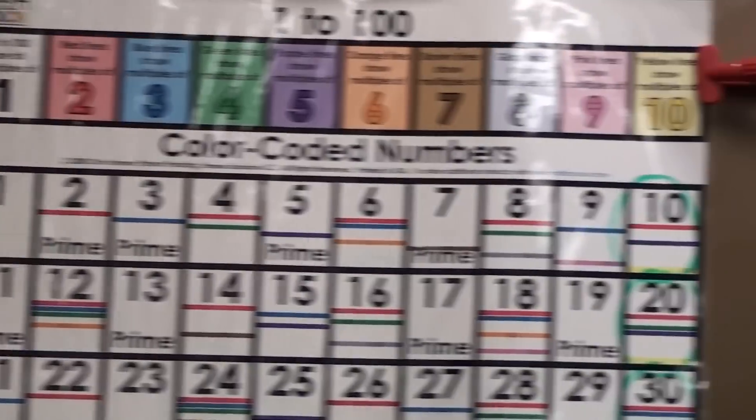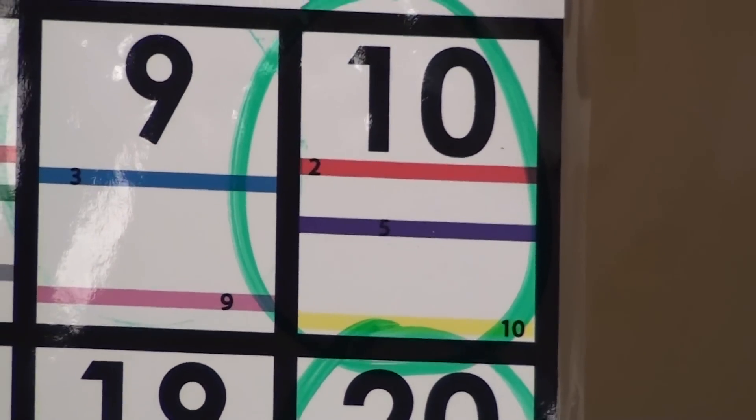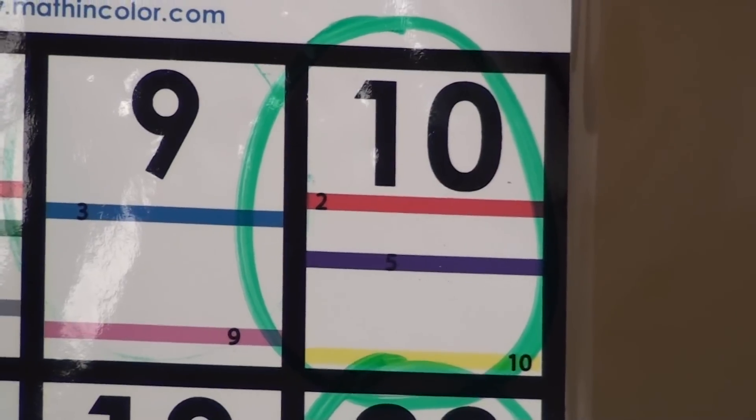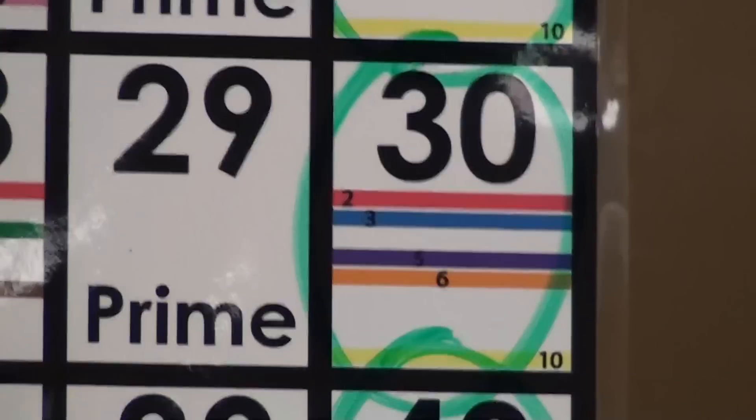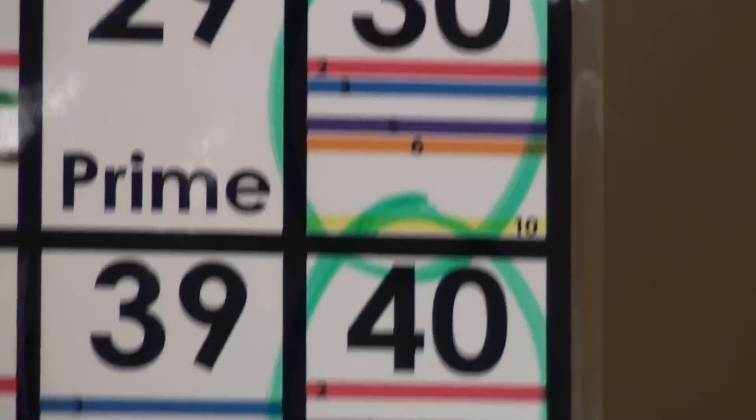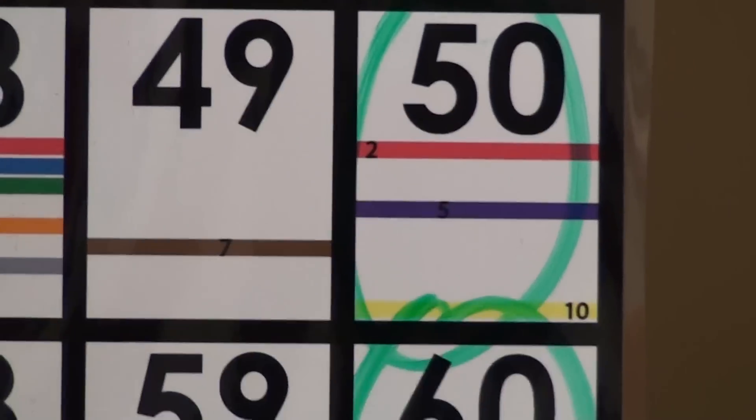If you do that, it will erase very easily. As we go over to the 1 to 100 chart, you can see with the color bars that all multiples of 10 are also multiples of 2 and 5.